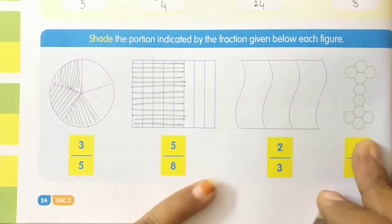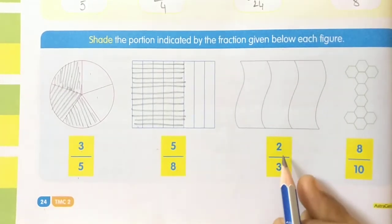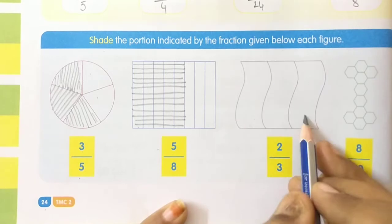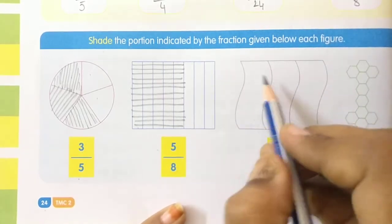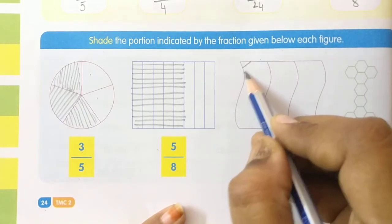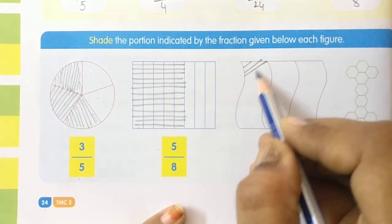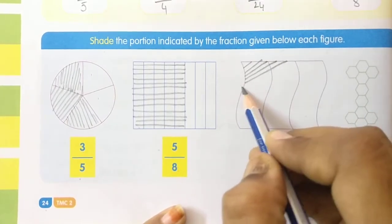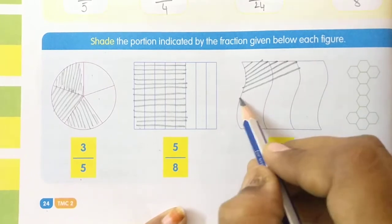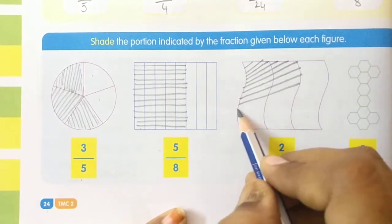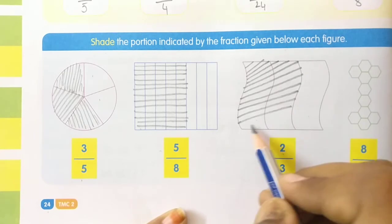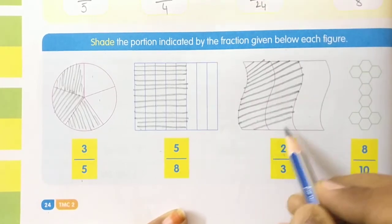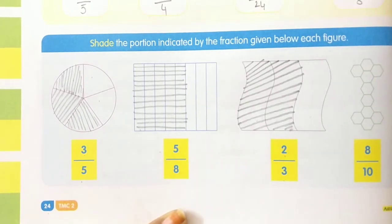Now come to the next one. Total three parts. How many parts do I have to shade? Two parts. Now all of you shade two parts children.